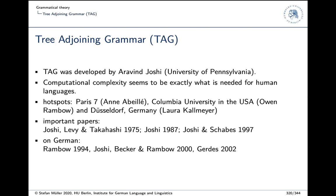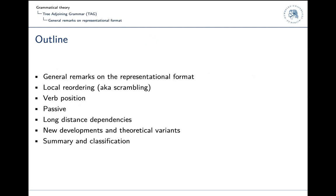On German there is work by Owen Rambow and colleagues and also by Kim Gerdes — it's in French unfortunately, but there is a larger work in German. The outline of today's session: first, general remarks on the representational format and basic mechanisms; then local reordering, also known as scrambling; verb position; passive; long distance dependencies; then some versions of TAG to give an idea of what else is possible; and finally some conclusions and general remarks.